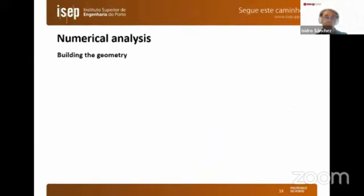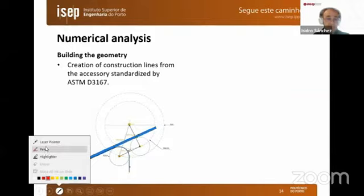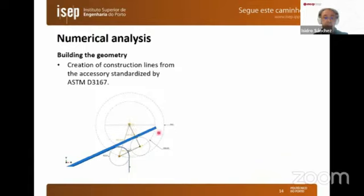First, we create the geometry following the standard as mentioned before. As we saw in the video, the angle of the substrate changes through the test. For that reason, we consider the two floating rollers and the center of rotation. We align the flexible adherent with the center of rotation of the rollers, and then we model the whole geometry following these constraints.